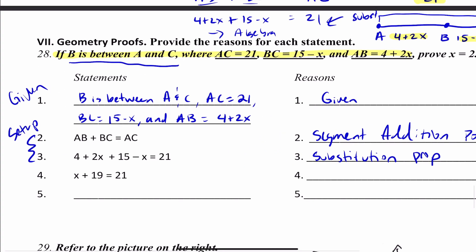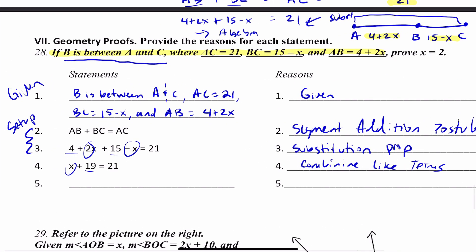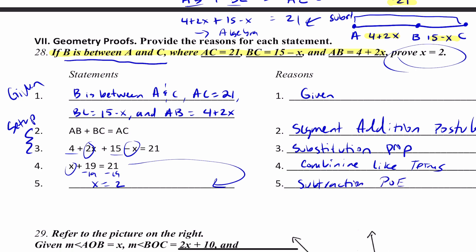This is all algebra now. 4 plus 15 is 19, and 2X minus X is X, so I'm combining like terms to get 19 plus X equals 21. Then I subtract 19 from both sides and get X equals 2 — that's the subtraction property of equality.